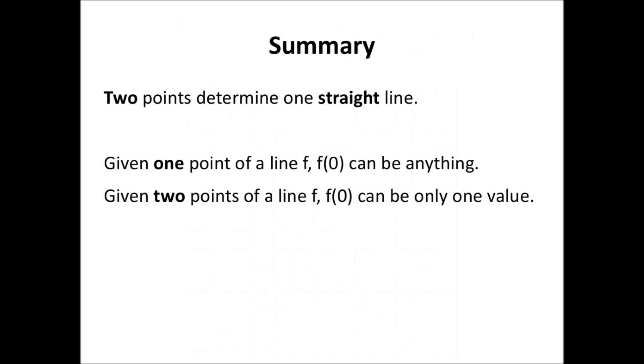So, summarizing what we have seen so far: two points determine one straight line. And if we know only one point of a straight line, f can be anything. But if we know two or more points of a straight line, there can be only one value of f of 0.